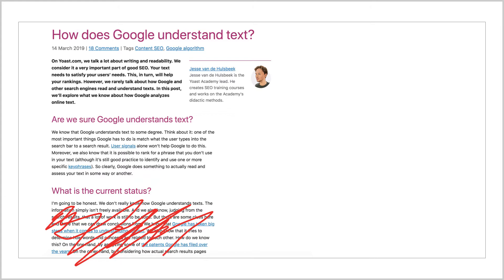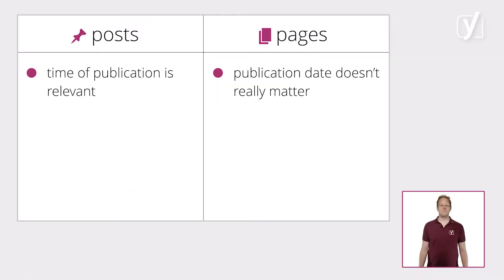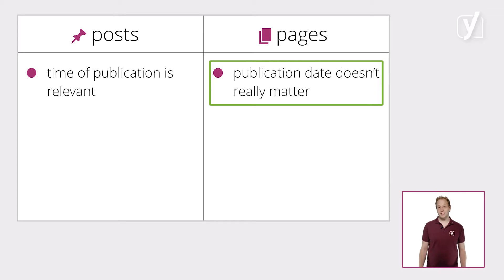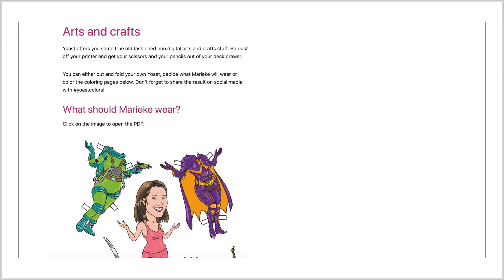We'll have to edit that post or write a new one to show how it works then. So posts show what something is or was like at a point in time. On the other hand, your website also has a number of pages that are basically static and not subject to the passage of time — like this arts and crafts page, where we put up some colouring pages and other creative stuff for children to enjoy.